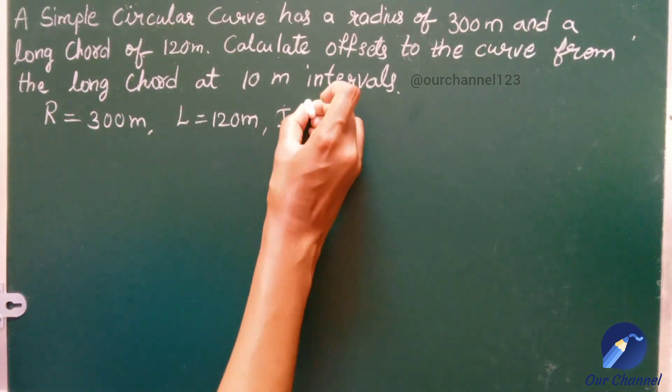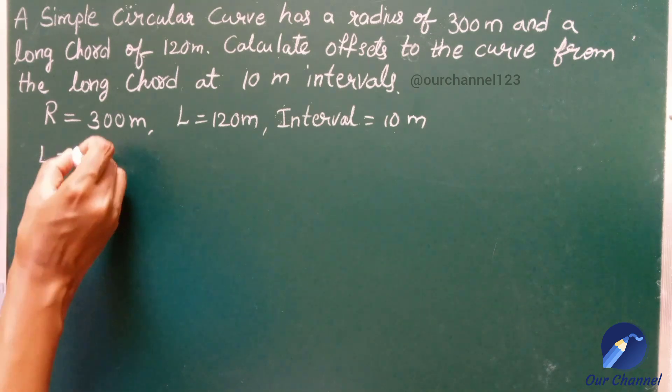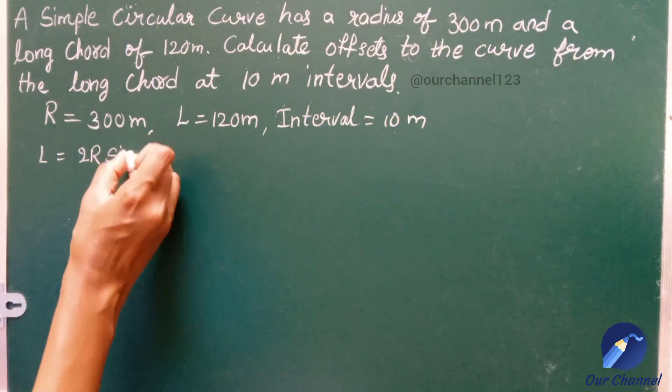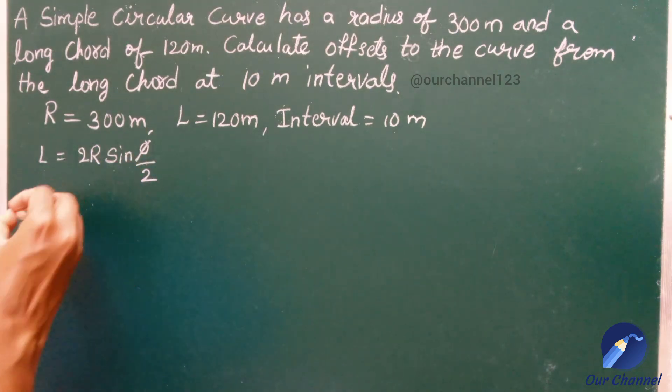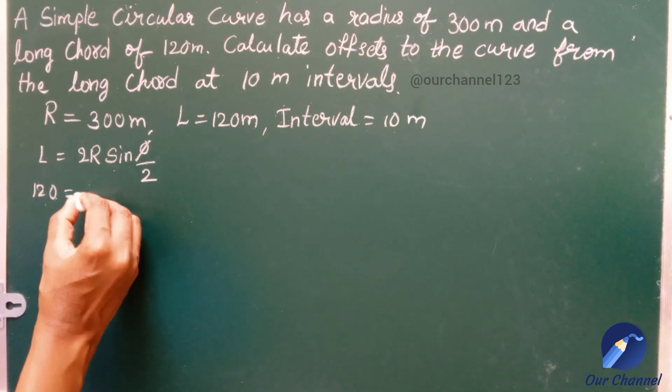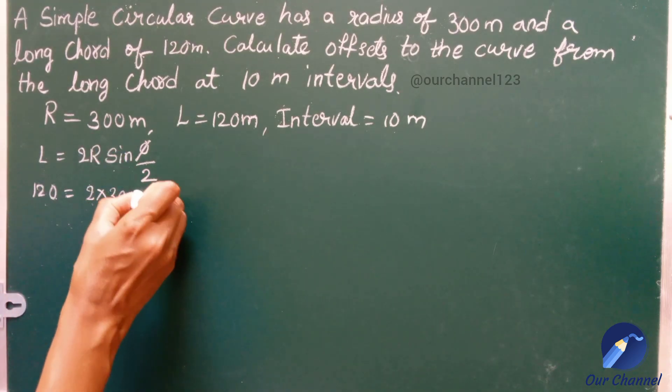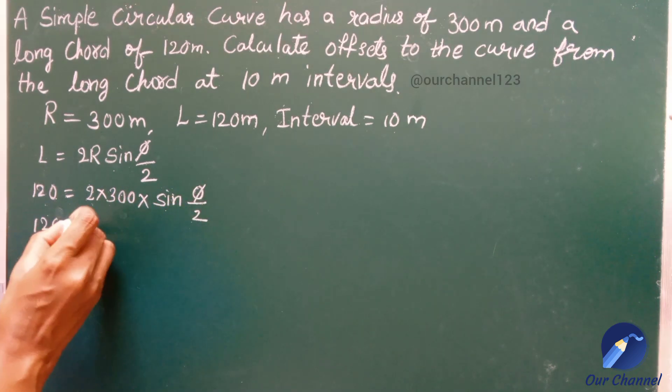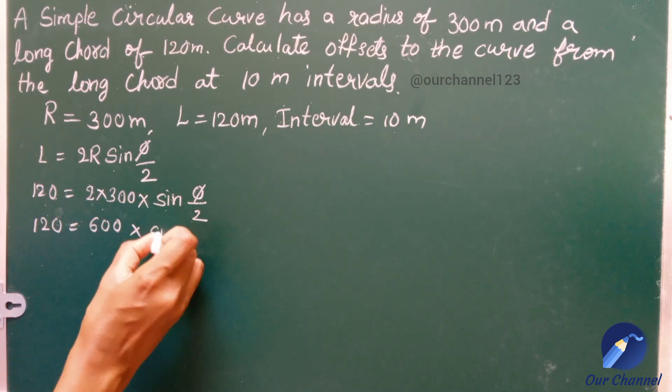We know that length of the long chord is 2R sin θ/2. From this formula we can find the deflection angle value θ. So let us substitute the remaining values: L is 120, next 2 into R is 300 into sin θ/2. 120 is equal to 2 into 300 is 600 into sin θ/2.